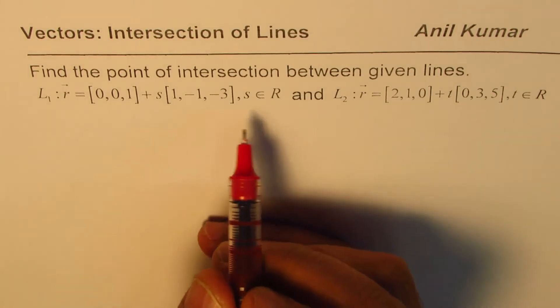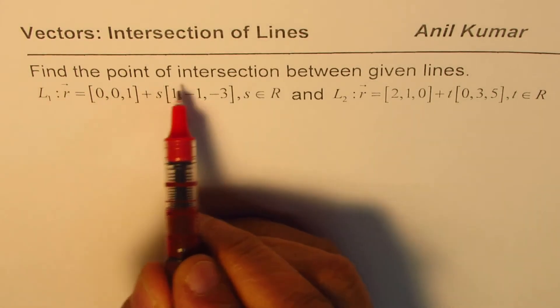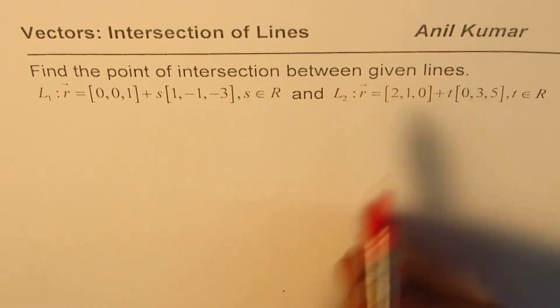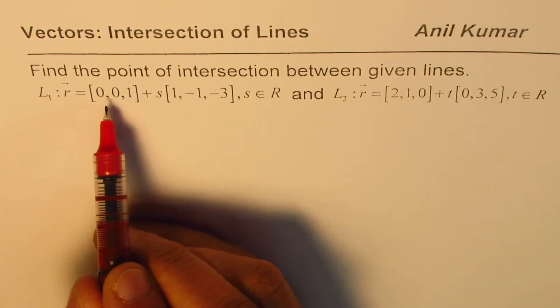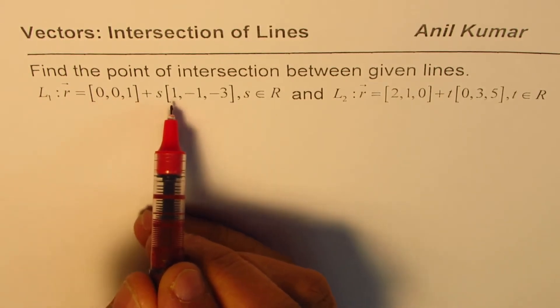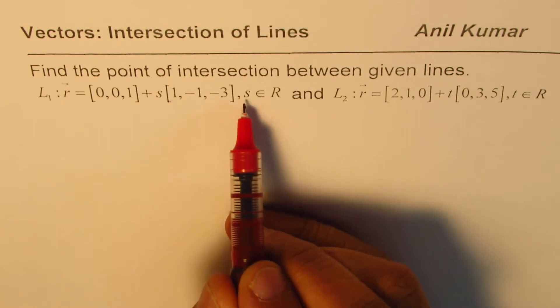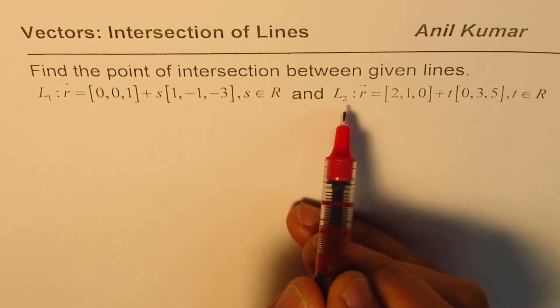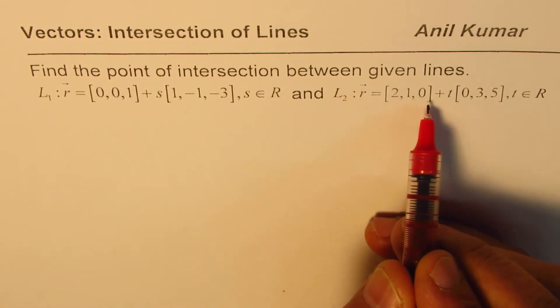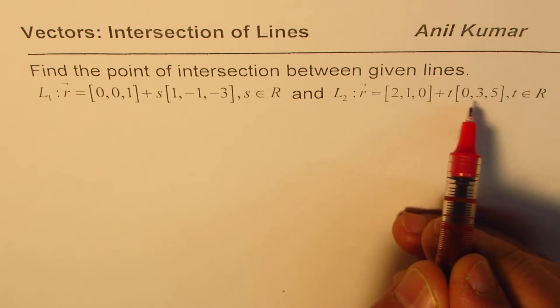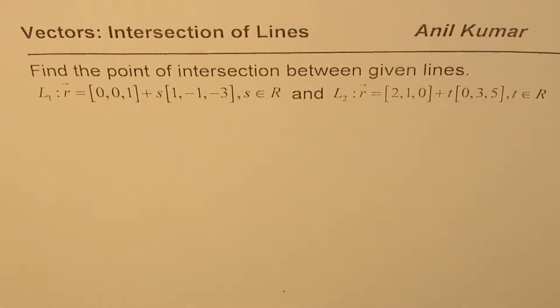So the question here is find the point of intersection between given lines L1: r = [0,0,1] + s[1,-1,-3] where s belongs to real numbers and L2: r = [2,1,0] + t[0,3,5] where t belongs to real numbers. So these are the two lines given to us.